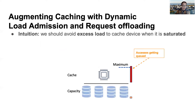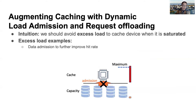Our intuition is that we should avoid adding access load to the cache device when the device is saturated. These access load examples include first, admitting data into the cache device to further improve hit rate. When the cache device is already saturated, improving hit rate no longer helps, while migration traffic can actually hurt overall performance. Hence, we should avoid such admission traffic when the device is saturated. Also, instead of letting too many cache hits overload the cache device, we should bypass some of them to the capacity device to utilize the performance available there.